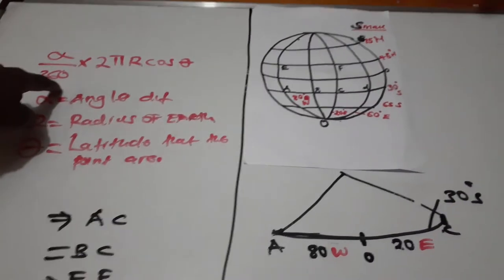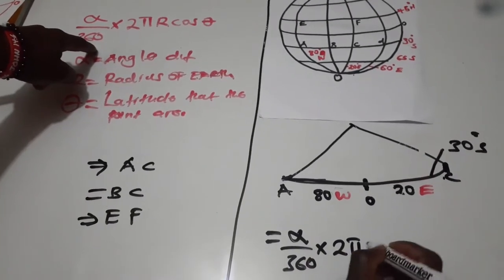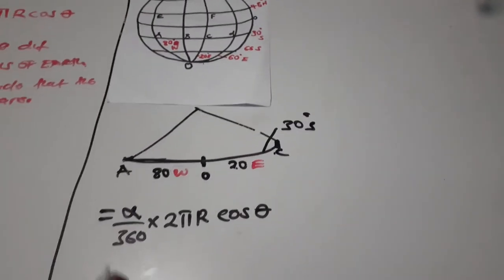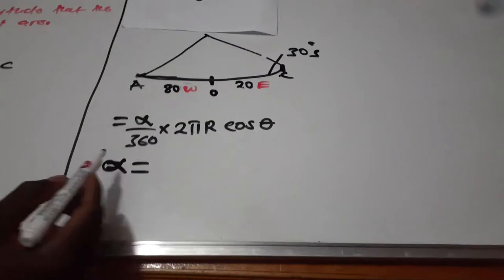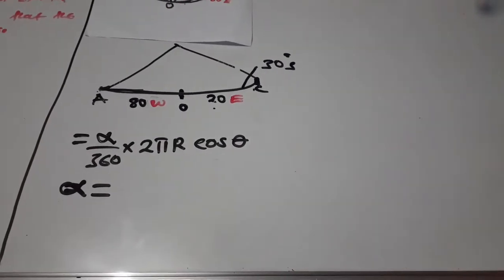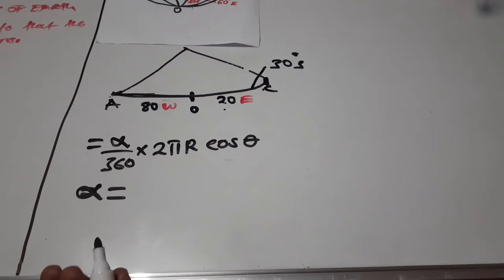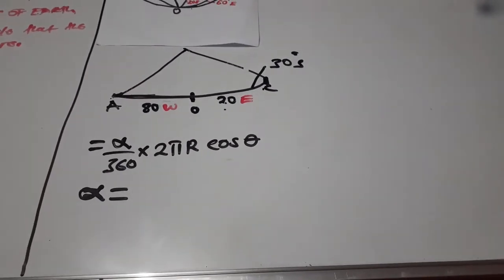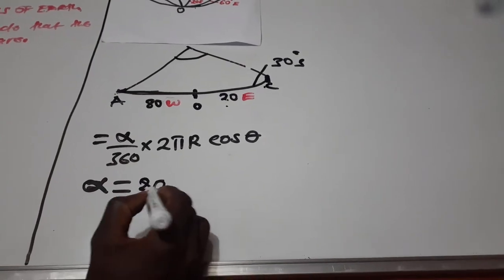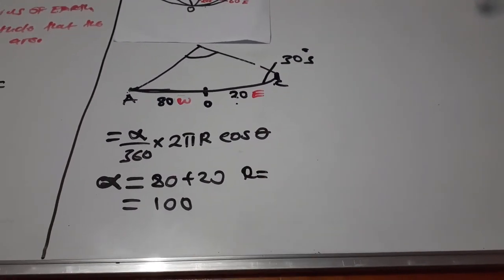Going back to our formula: angle difference over 360, times 2πr cosine of that latitude. The angle difference between A and C is 80 plus 20. As we said in our previous video, when points are on different hemispheres — west to east — we add. So the angle difference is 80 plus 20, which gives us 100 degrees.